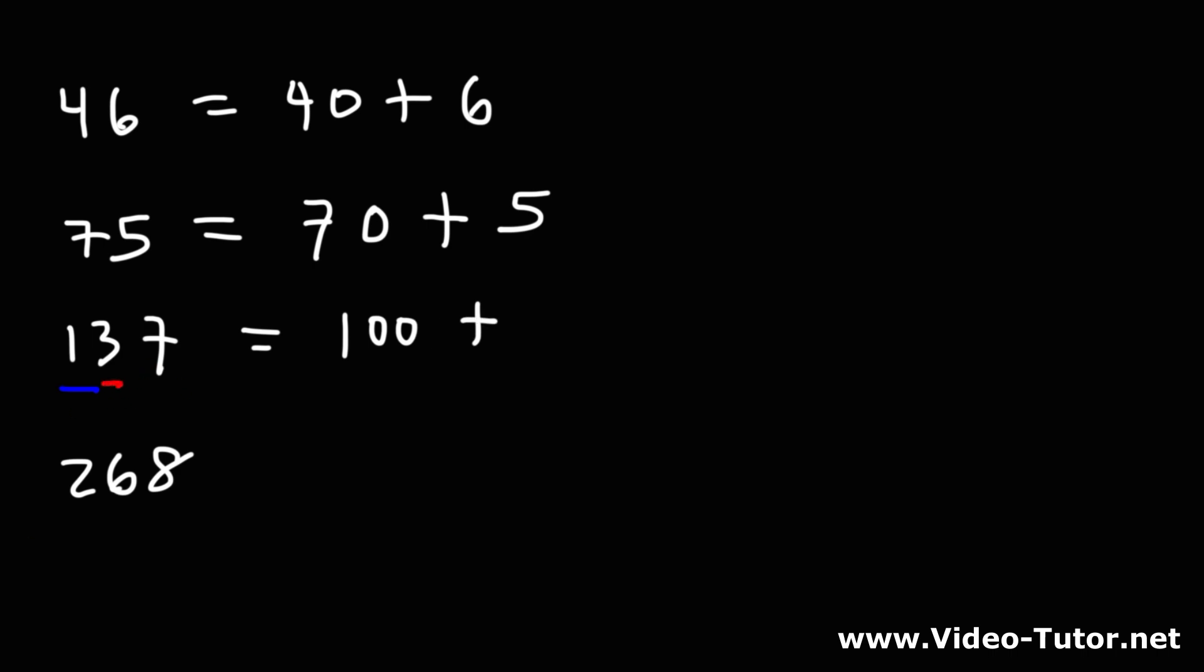Then start with the next digit, 3, that's in a tens place which represents a value of 30. And then the last digit, 7. So 137 is 100 plus 30 plus 7.